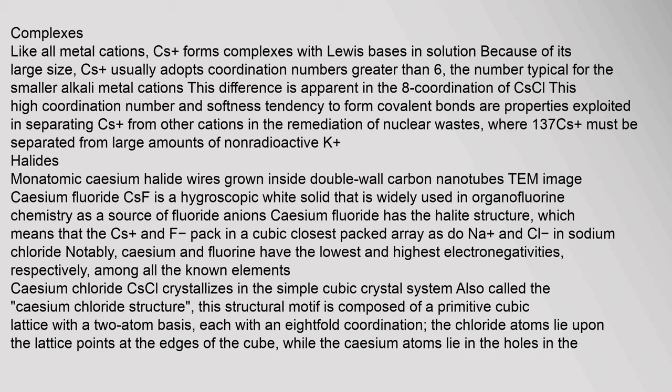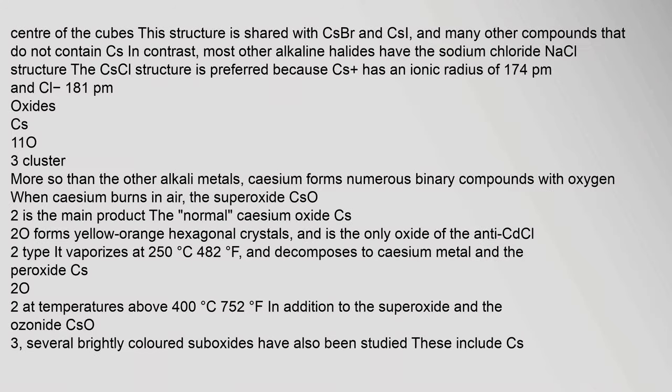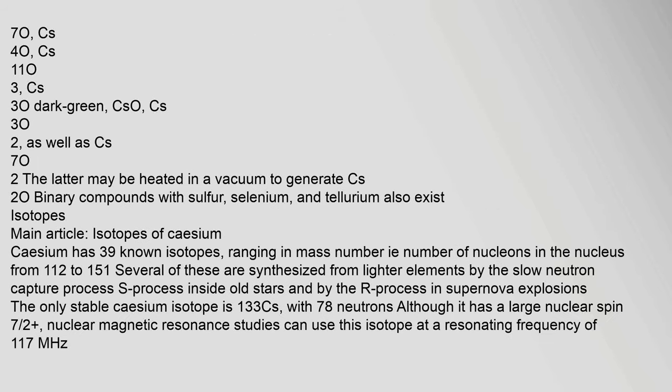The caesium chloride structure is composed of a primitive cubic lattice with a two-atom basis, each with eightfold coordination. The chloride atoms lie upon the lattice points at the edges of the cube, while caesium atoms lie in the holes in the center. This structure is shared with caesium bromide and caesium iodide. Most other alkali halides have the sodium chloride structure; the caesium chloride structure is preferred because Cs⁺ has an ionic radius of 174 pm.